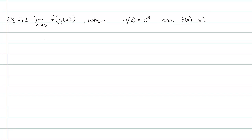What the theorem is essentially saying is that as x approaches 2, we look at g(x) first and see if this function approaches something that f is continuous at. The limit as x approaches 2 of g(x) is the limit as x approaches 2 of x squared — using properties we know, that's 2 squared, or 4.